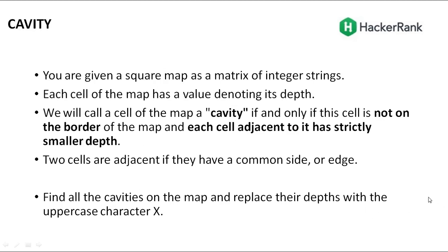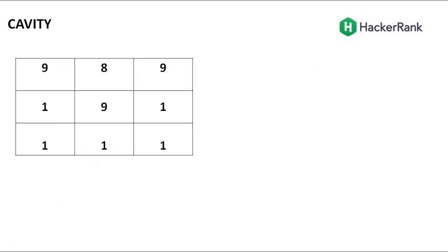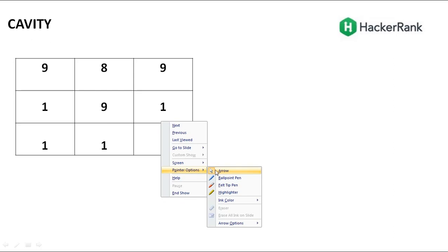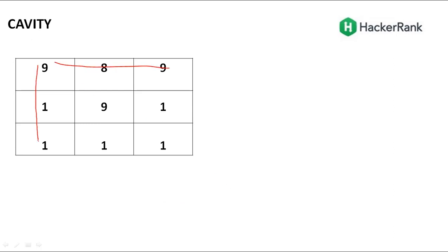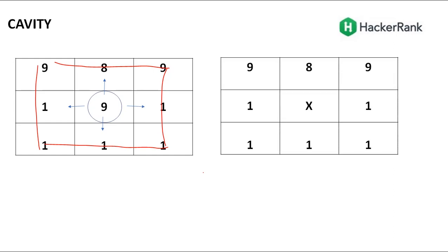The key points are captured here — if you want, you can pause and read them. Now, this is the first input. The adjacent cells — the border cells — are not cavity cells, so you don't need to bother about them. For every other cell, if it has a value greater than all adjacent cells, then that cell is a cavity. For example, if you take this 9, we compare it with all adjacent cells — top, down, left, and right — and all of them have a smaller value, so we replace it with X.